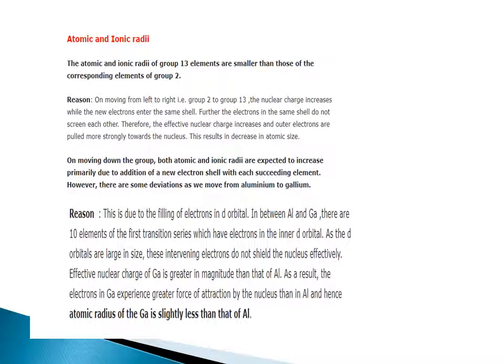Atomic and ionic radii. The atomic and ionic radii of group 13 elements are smaller than those of corresponding elements of group 2. On moving from left to right, nuclear charge increases while new electrons enter the same shell. Since electrons in the same shell do not screen each other effectively, the effective nuclear charge increases and outer electrons are pulled more strongly towards the nucleus, resulting in a decrease in atomic size.